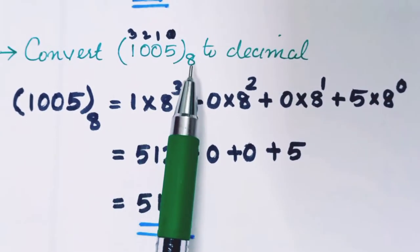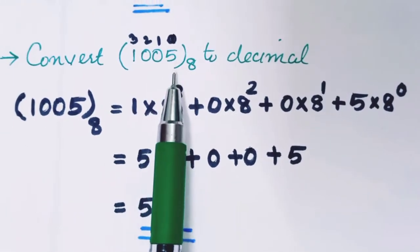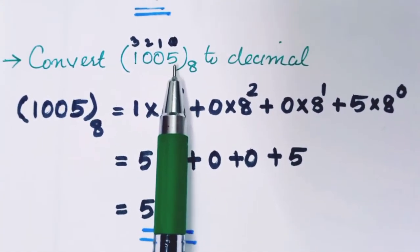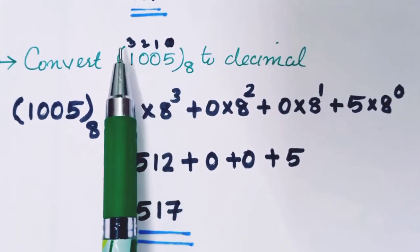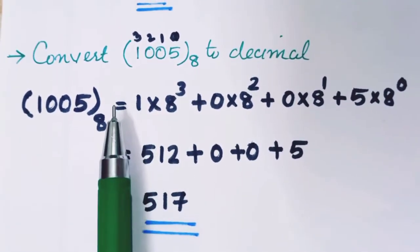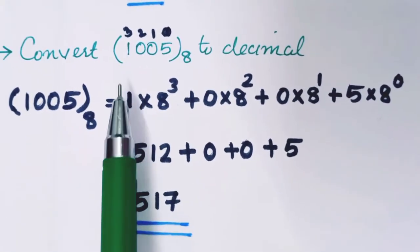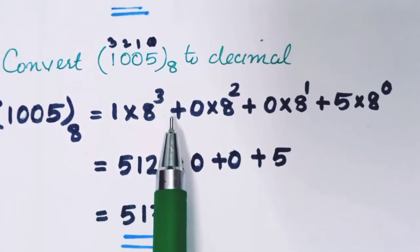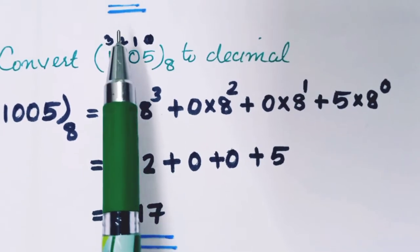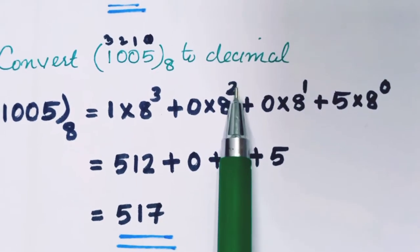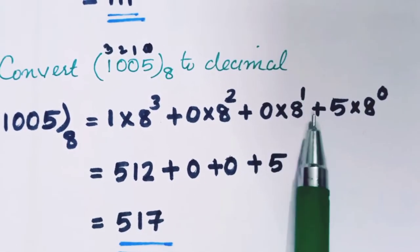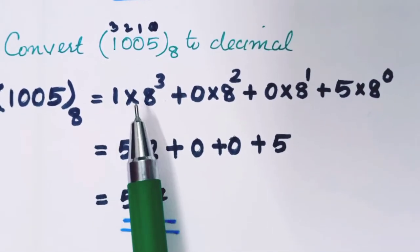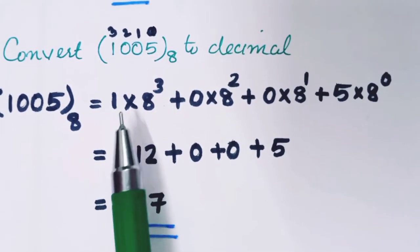Let's take a look at the next example: convert 1005 in Base 8 to Decimal. The octal number 1005 has digits 1, 0, 0, 5. The digit 5 is at position 0, 0 is at position 1, 0 is at position 2, and 1 is at position 3. So 8 raise to 3 gives 512, and 1 × 512 = 512.